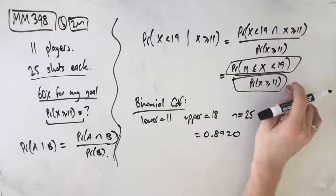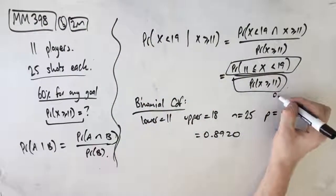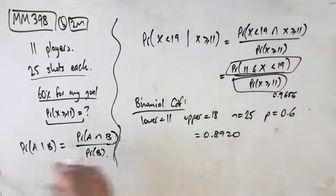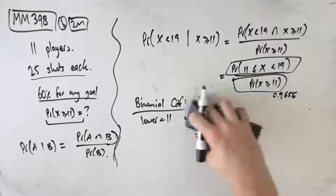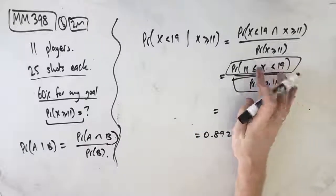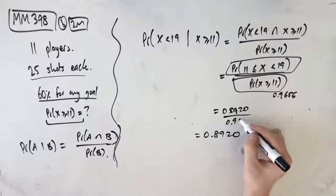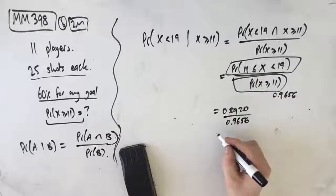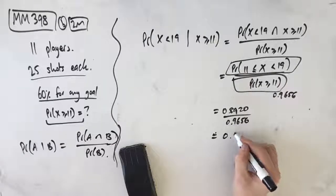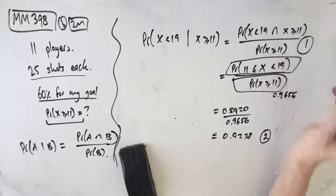Now we need P(X ≥ 11), which we actually found in the previous question — that's 0.9656. So the probability that X is between 11 and 19 is 0.8920, divided by 0.9656, which gives us 0.9238. This is our second mark. The first mark comes from recognizing the conditional probability setup, and the second mark from evaluating this. That's it for part B.